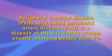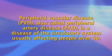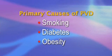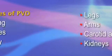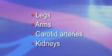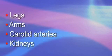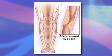Peripheral vascular disease, or PVD, also called peripheral arterial disease or PAD, is a disease of the circulatory system usually affecting people over the age of 50. Atherosclerosis, the build-up of fatty material in the blood vessels, is the most common condition causing PVD. Primary causes of PVD are smoking, diabetes, and obesity. A person's legs, arms, carotids, and kidneys are the most common areas where PVD manifests, with the legs being the most frequent place.